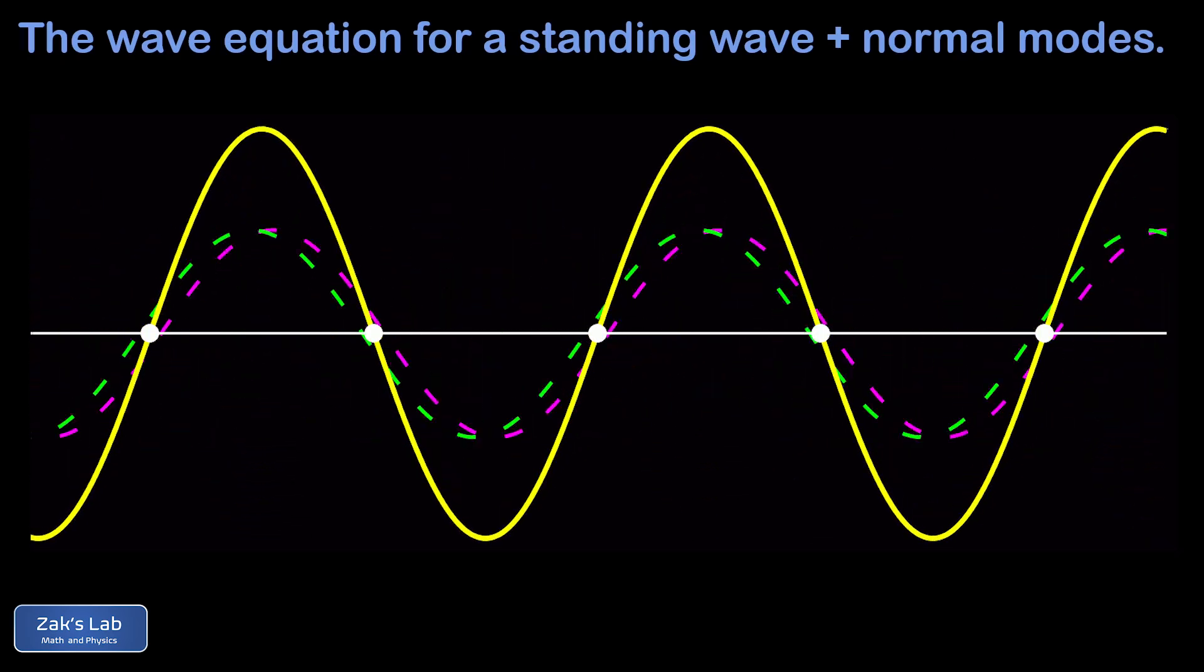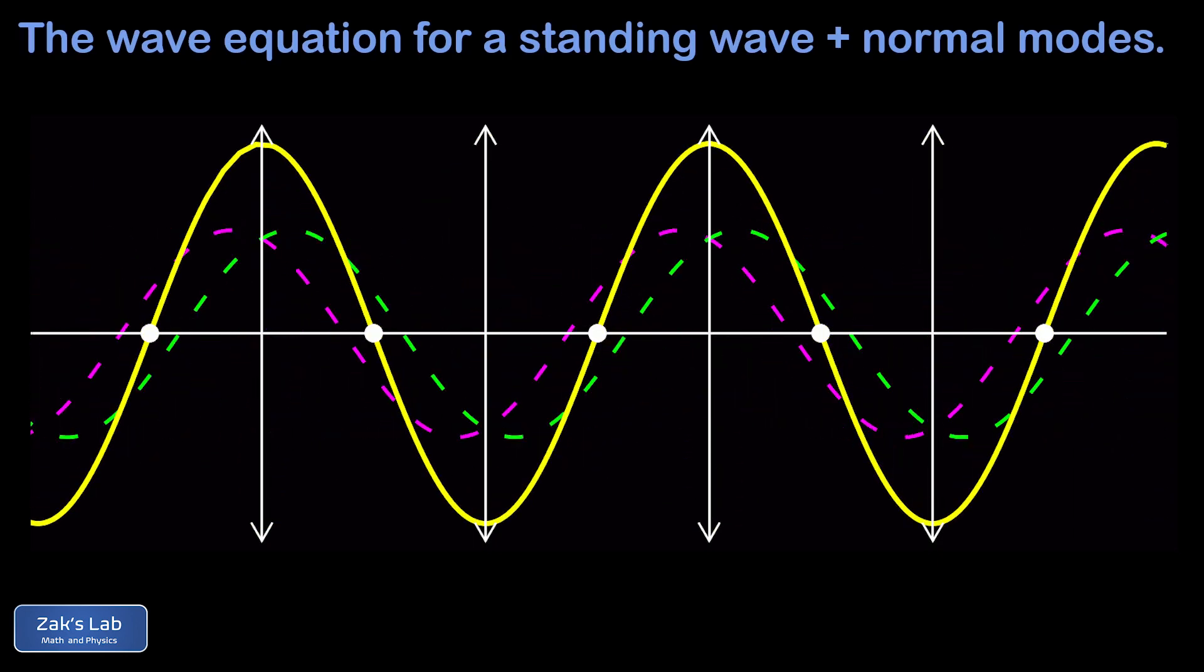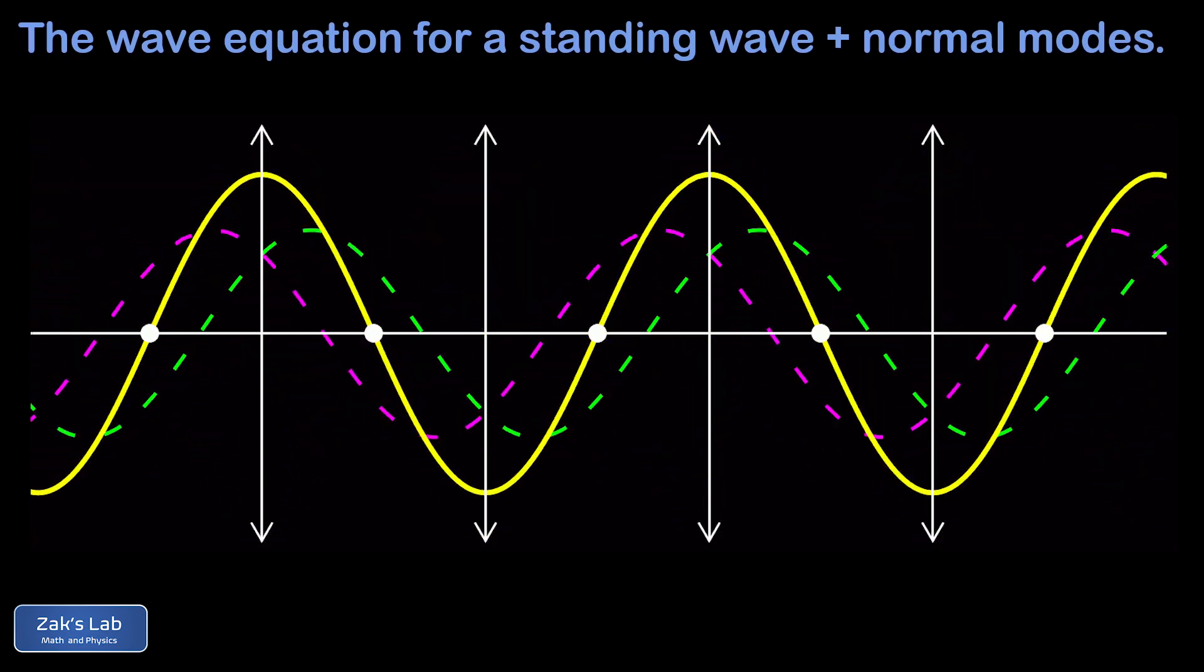There are spots on the string that never move, and these are called nodes, and there are spots on the string that move with maximum amplitude, and these are called antinodes.